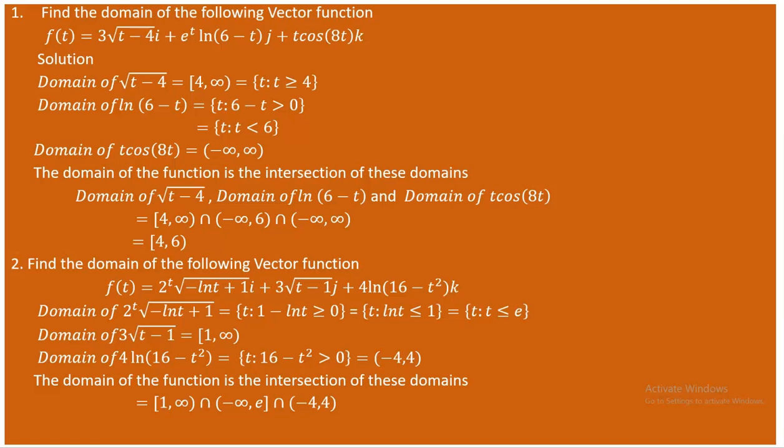You can prepare a number line to visualize this. The final intersection is [1, e], meaning that for any t value between 1 and e, the vector function is defined. Outside this interval, the function is undefined.